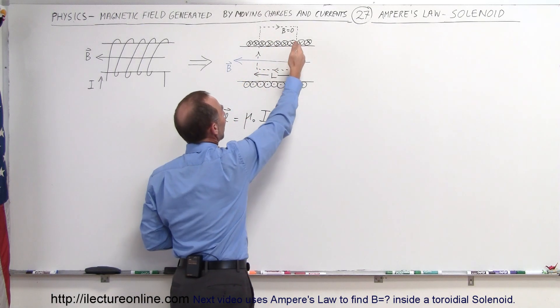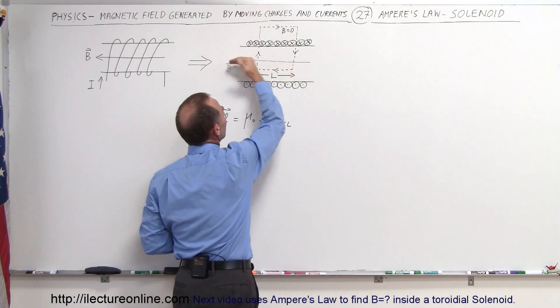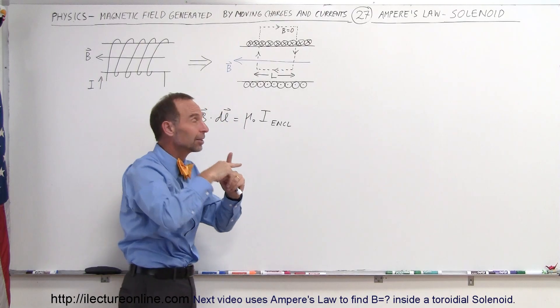Inside, you can see that the path over which we're going to integrate is going to be in this direction. But we know that the B field, the magnetic field, is in this direction. That means that they're perpendicular.